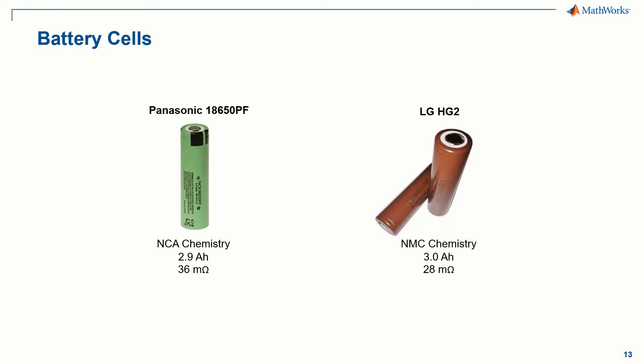The test results for two 18650 form factor cylindrical battery cells were used in this work. One was a Panasonic 18650 PF NCA chemistry cell and the other was an LG HG2 NMC chemistry cell. Both cells have similar capacity, around three amp hours, and the LG HG2 cell has a slightly lower nominal resistance of 28 milliohms. Two cells with different chemistries are used to demonstrate that the neural network SOC estimation algorithm can perform well for either.